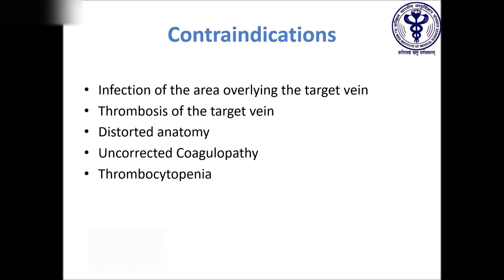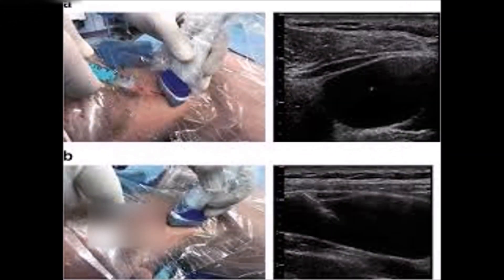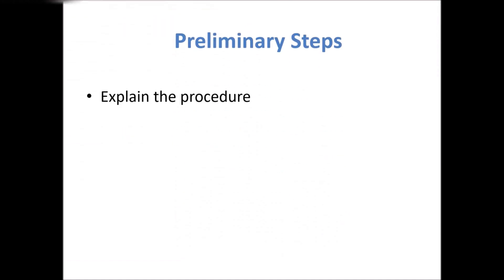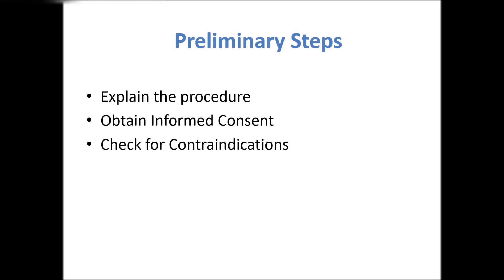Coagulopathy and thrombocytopenia are relative contraindications to insertion of a central line. In such scenarios, ultrasound-guided central line insertion must be considered. Before you begin, explain the procedure to the patient and attendant, obtain informed consent, check medical records for contraindications such as thrombocytopenia and deranged INR, and locate landmarks for localization of the internal jugular vein.